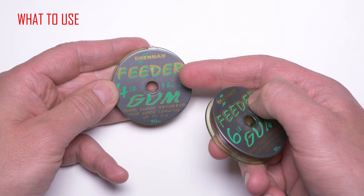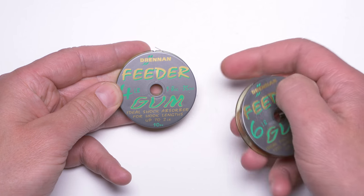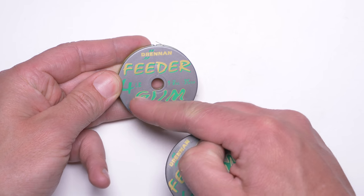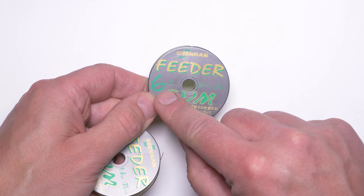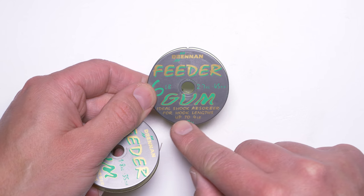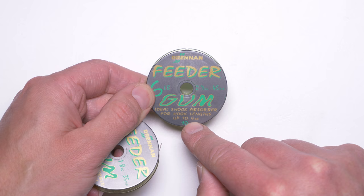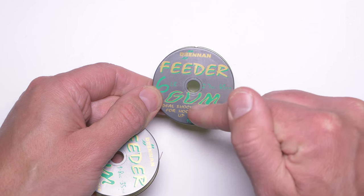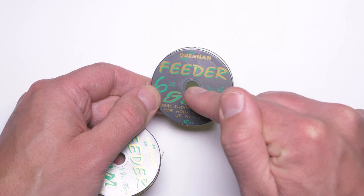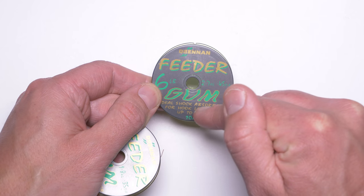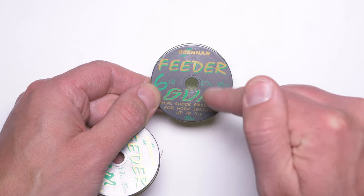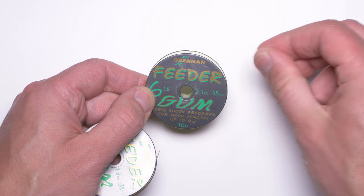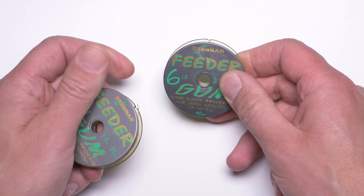The best feeder gum on the market in my opinion is Drennan. They do them in a couple of diameters and breaking strengths as well. My favorite would be one which is rated to six pounds and it says that hook link should be up to four pounds. I would use this six pound feeder gum when I would be fishing with very fine hook links, let's say 0.08 or even lower. I don't want that my feeder gum would be bottomed out when I am hooking that bigger fish.